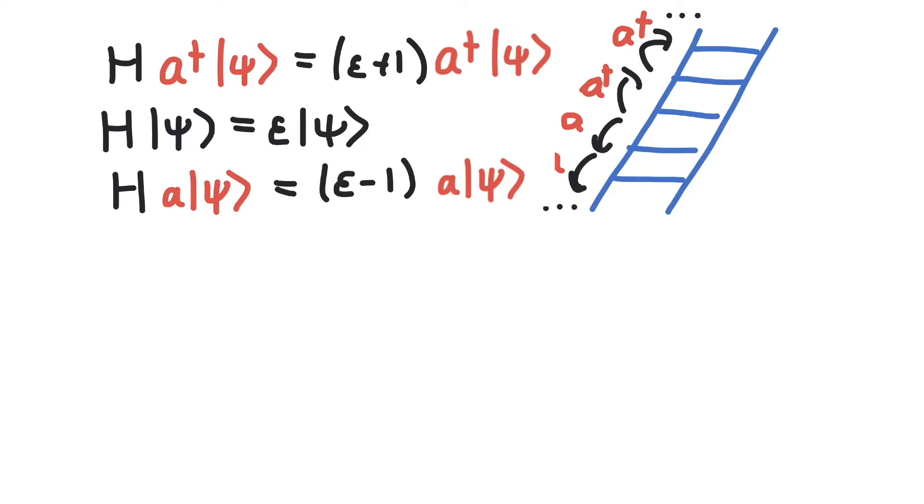So let's imagine there is a lowest state. Let's call this capital L. The requirement that it really is a lowest state is that if we apply the annihilation operator on this lowest state, it does not yield another state, but it vanishes. So what kind of insight do we get from here?